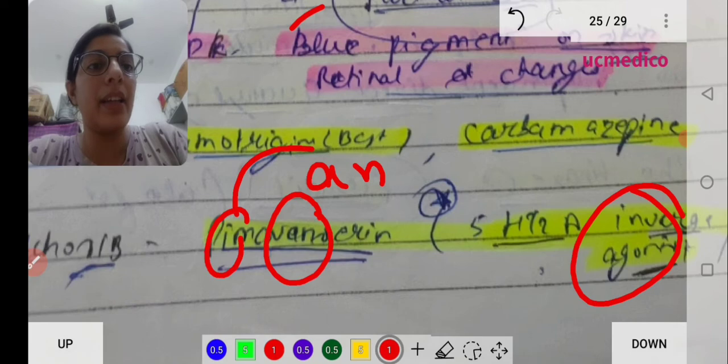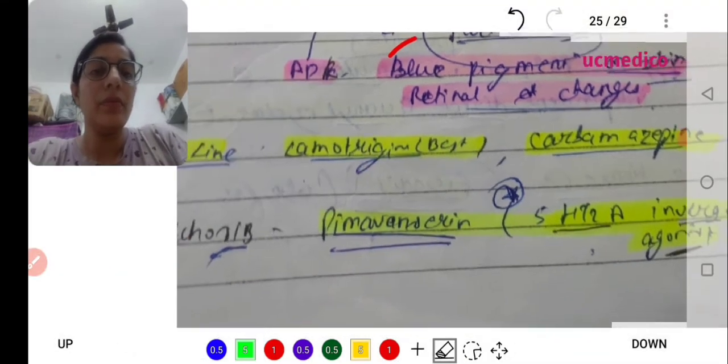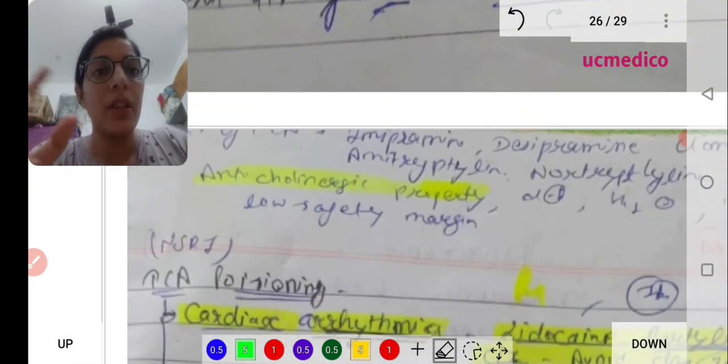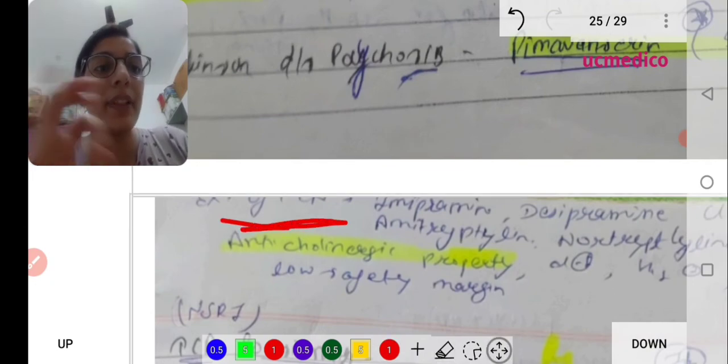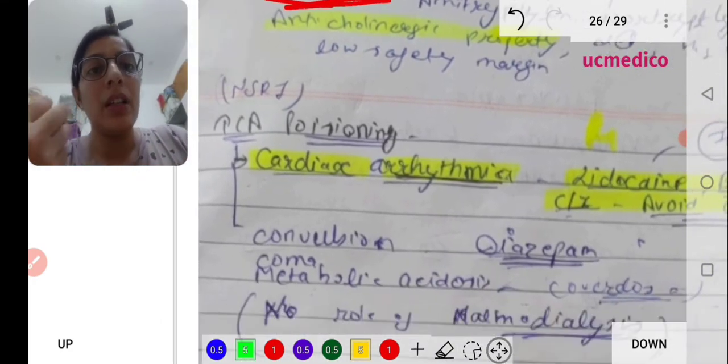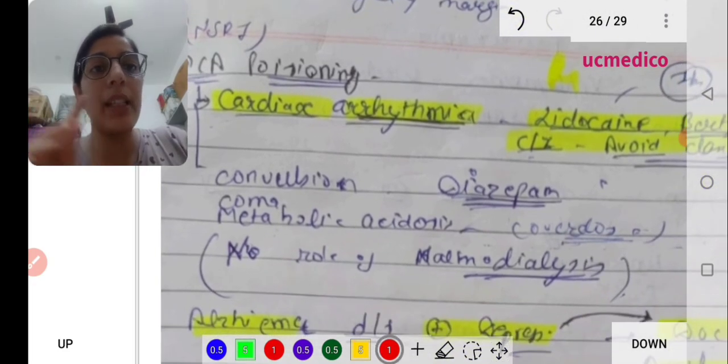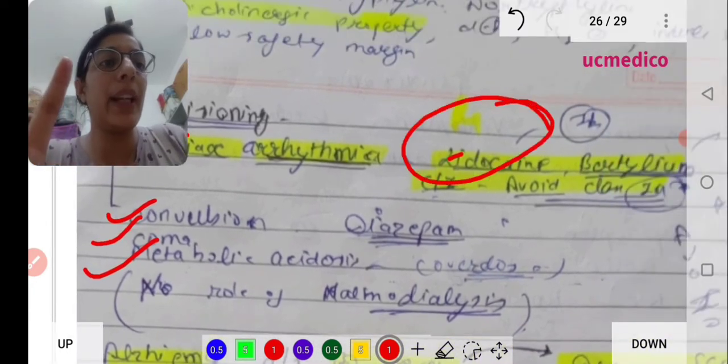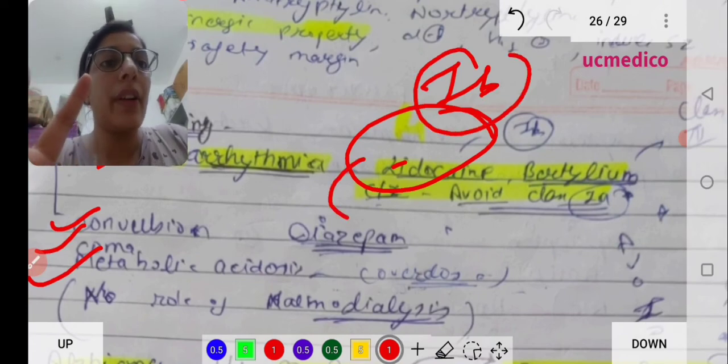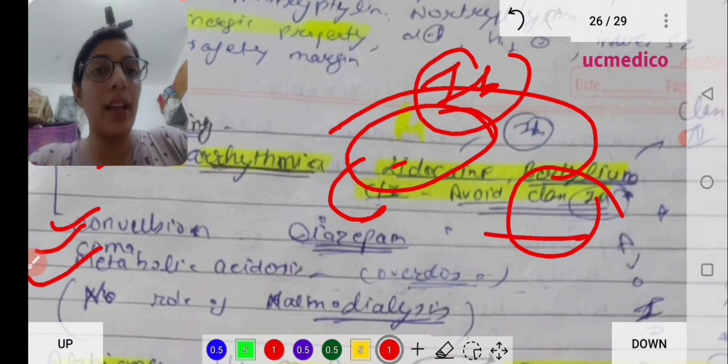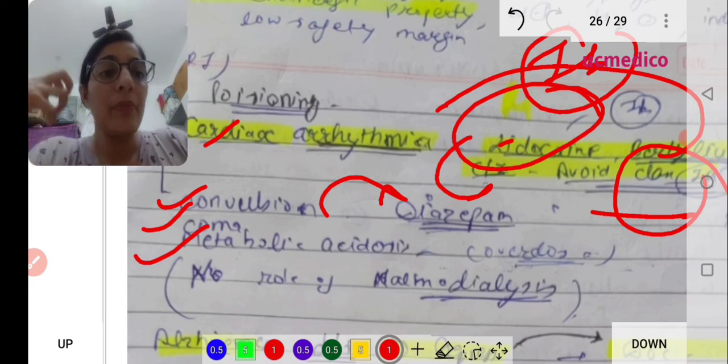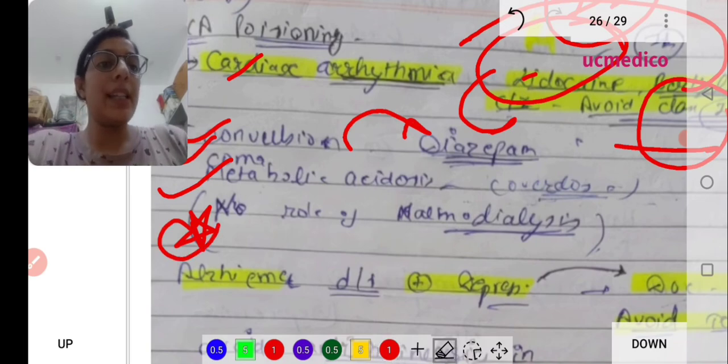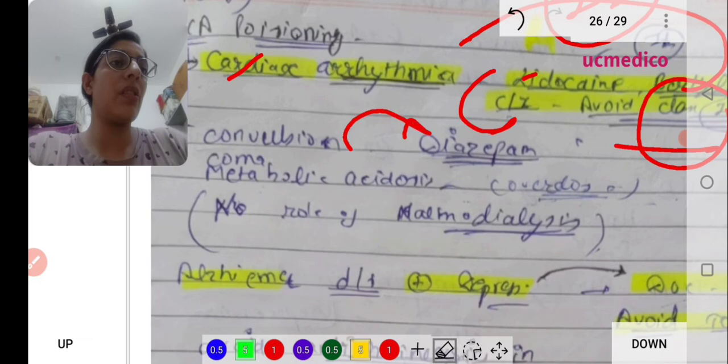These are tricyclic antidepressants with anticholinergic properties. Tricyclic antidepressant poisoning causes cardiac arrhythmia, convulsions, coma, and metabolic acidosis. For cardiac arrhythmia, we give lidocaine. This belongs to class 1B. Contraindicated - avoid class 1A drugs in tricyclic antidepressant-induced poisoning. For convulsions, diazepam. Important thing - there is no role of hemodialysis here.